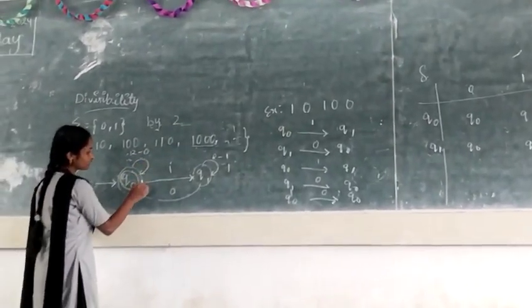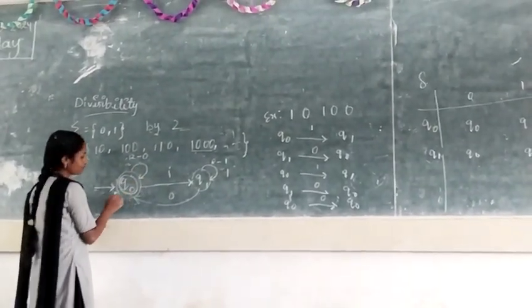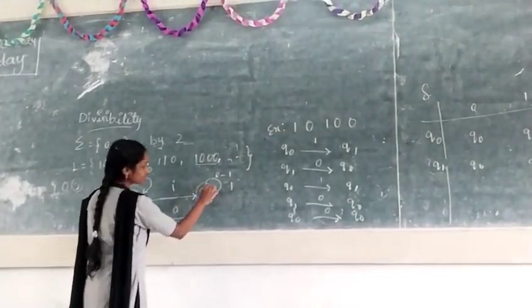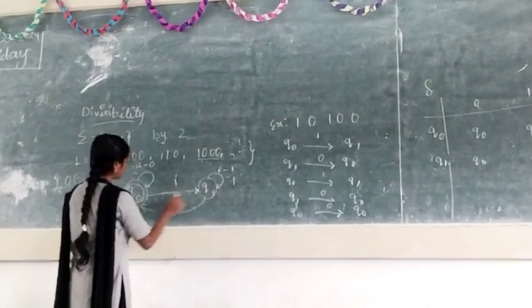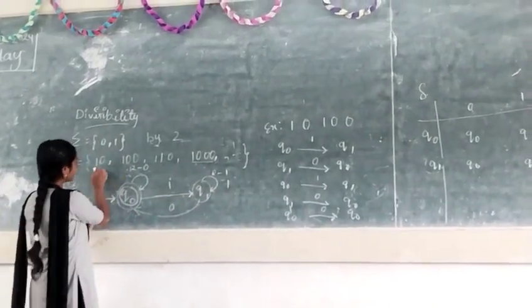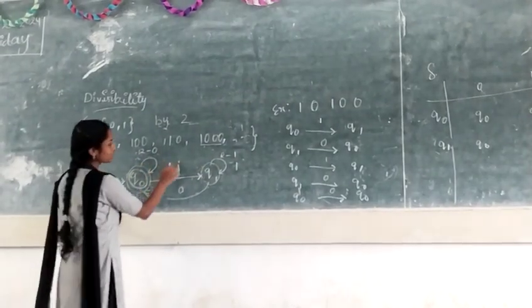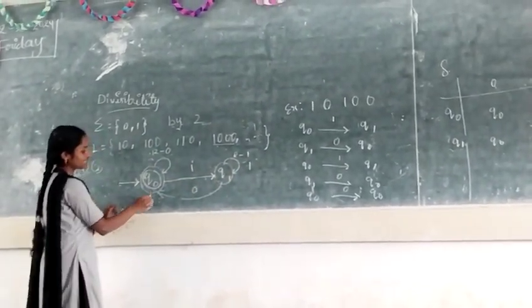If we give the input zero, then it will be final state. Final state is represented by double circle. If we give any input, then that string must go to the final state.